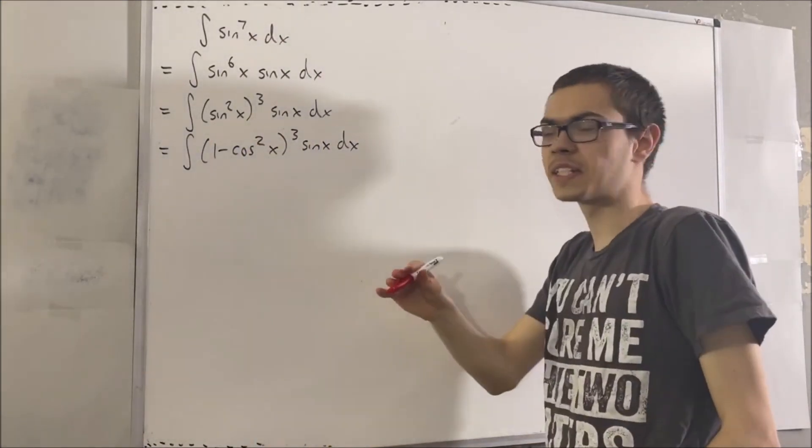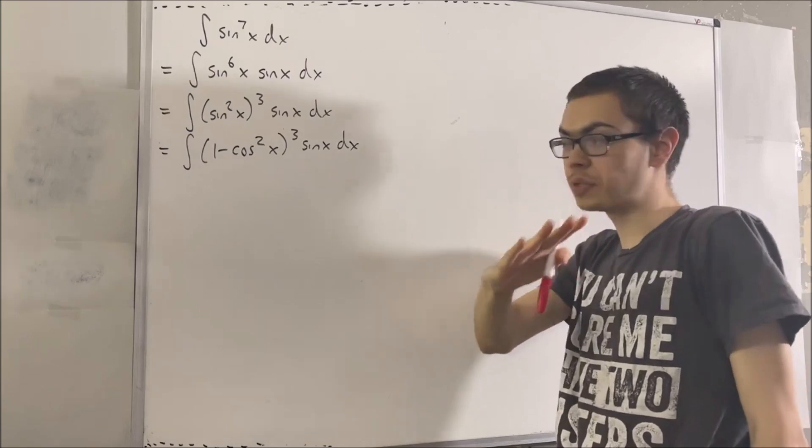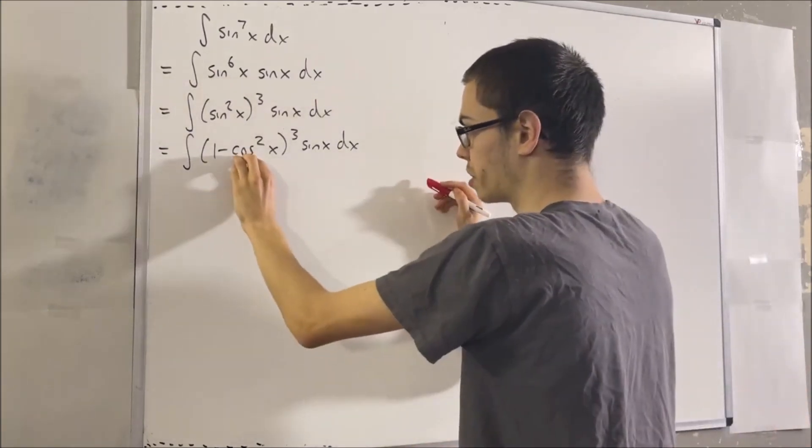And so now that we have this, it's really convenient if we do a u substitution. We could set u equal to the cosine of x.